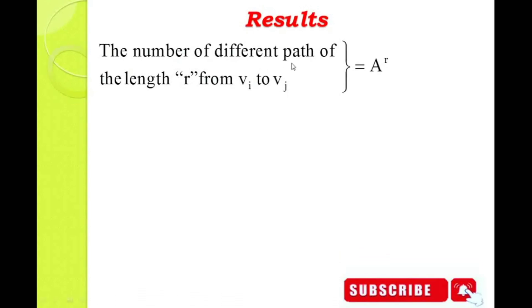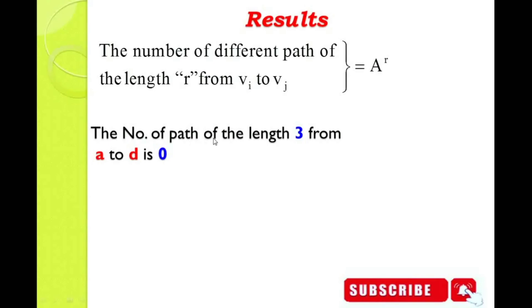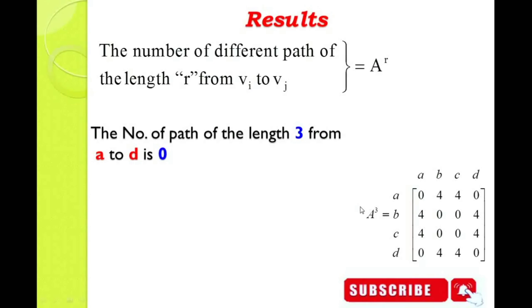Now we find the number of different paths of the given lengths. The number of different paths of length R from one vertex to another is A power R. For the first question, R equals 3, so we look at the A cubed matrix. Going from vertex A to vertex D, the answer is 0. In the A cubed matrix, the entry for A to D is 0, meaning there is no path of length 3 from A to D.